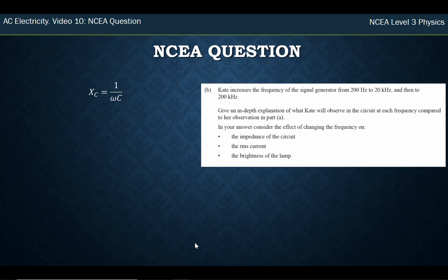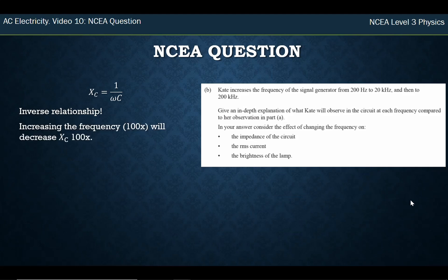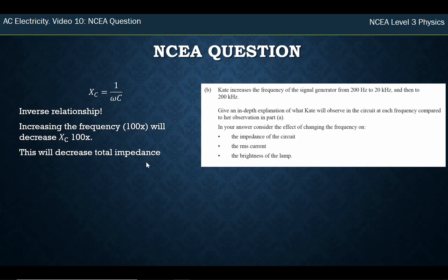Let's do the first one — 20 kHz. We know that the capacitive reactance equals 1 over ωC, and ω is 2π times the frequency. So the reactance of the capacitor depends on the frequency, but it's an inverse relationship. When I increase the frequency by 100 times — going from 200 to 20,000 — that means I decrease the reactance by 100 times. That number gets smaller. Because I've decreased one of the reactances, my total impedance goes down as well.